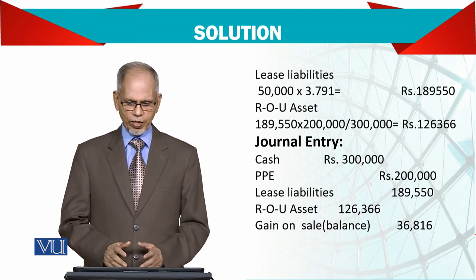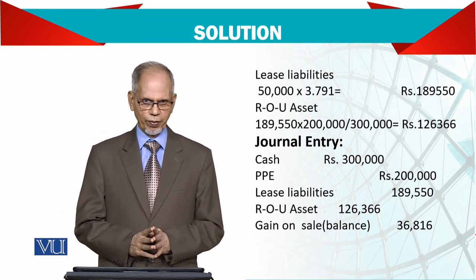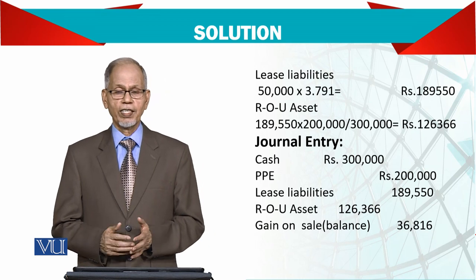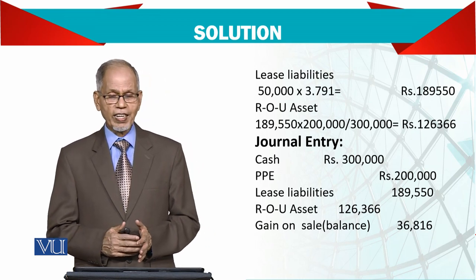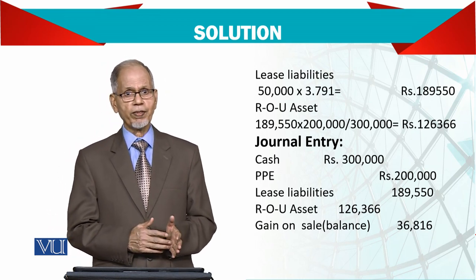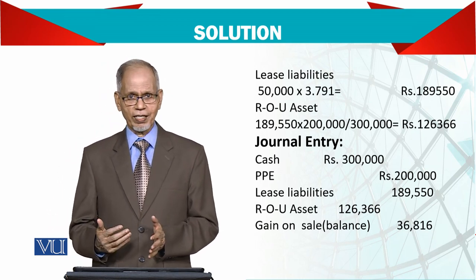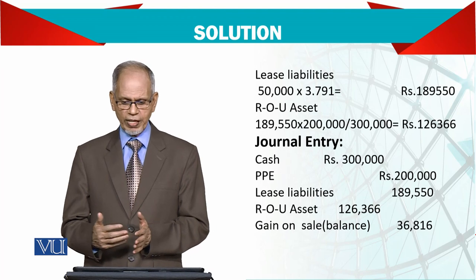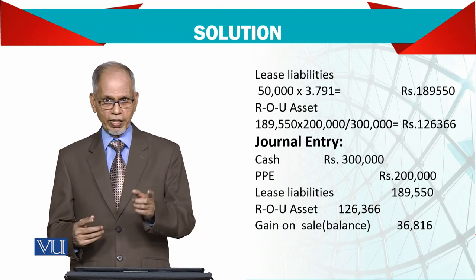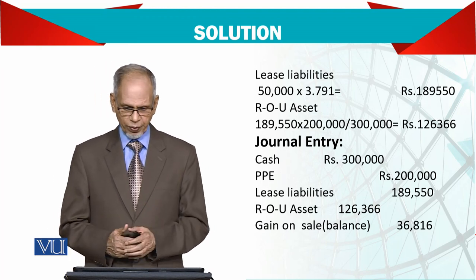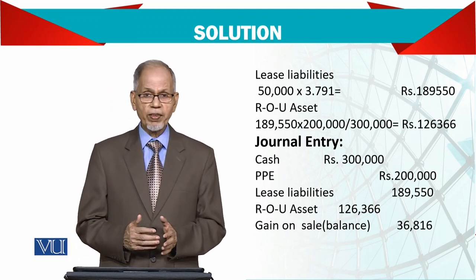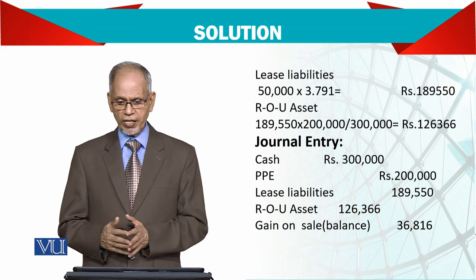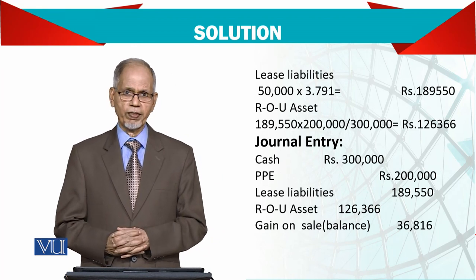Cash is received because we are selling an asset. We derecognize the asset — property, plant and equipment of 200,000 (the carrying value) — and we recognize the lease liability of 189,550.